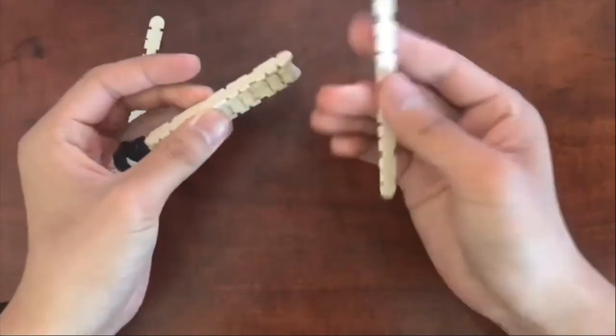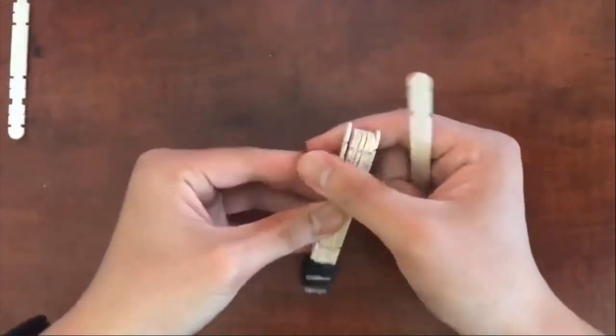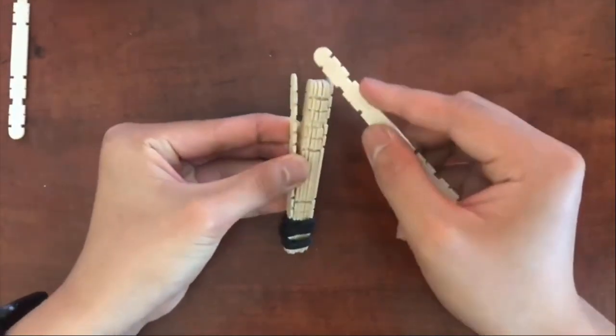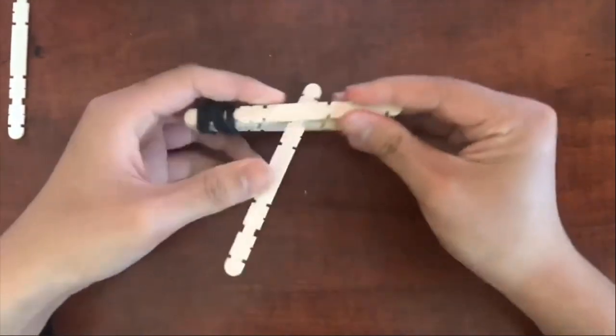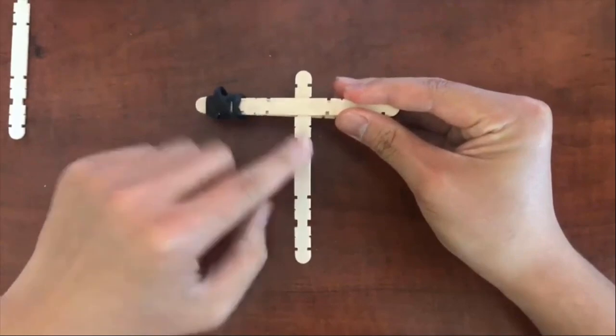Next, you're going to want to take another popsicle stick, spread apart one popsicle stick from the rest, and then you're just going to layer it between, perpendicular, with 90 degree angles.